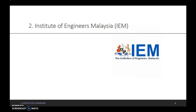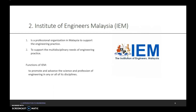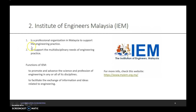The second main body of engineering in Malaysia is the Institution of Engineers Malaysia, IEM. IEM was established in 1959 in order to support engineering practice and to support the multidisciplinary needs of engineering practice. The function of IEM is to promote and advance the science and profession of engineering in any or all of its disciplines, and to facilitate the exchange of information and ideas related to engineering. You can find a lot of information about IEM on their website.